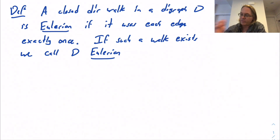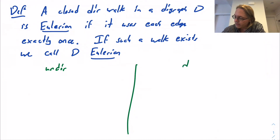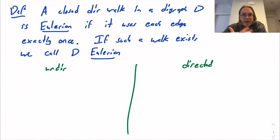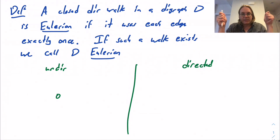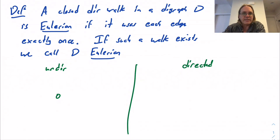Let me go back to the undirected setting and remind you of that obstruction. In the undirected setting, assuming the graph is connected, the only obstruction was a vertex of odd degree. It's actually very easy to see: if you assume that your graph is Eulerian, there's a closed walk using every edge exactly one time. Imagine we have some vertex that's not the start or the end — let's think about a vertex that's not the beginning or the end.